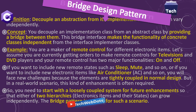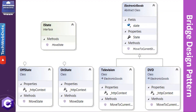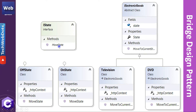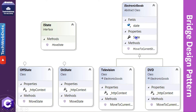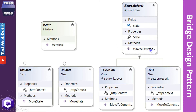Let's look at the class diagram. On the left-hand side, we have the IState interface with one method: MoveState. This IState interface is implemented by OffState and OnState, both of which implement the MoveState method. On the right-hand side, ElectronicGoods is our abstract class containing a State property through which we initialize the state, and one abstract method: MoveToCurrentState.